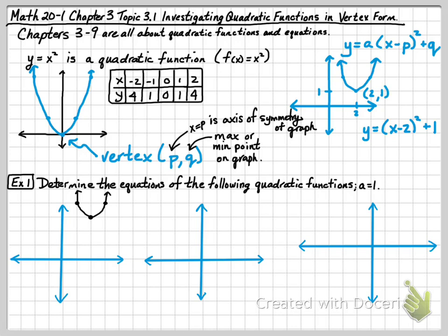In our first one, if I drew a parabola, here we have the vertex is at 2, 3. So that would give me the equation of Y is equal to X minus 2 squared plus 3.